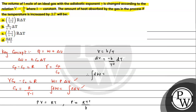Since pressure varies with temperature, we use the integral form: W equals integral of P dV. Substituting P equals RT squared divided by b and dV equals minus b divided by T squared times dT, the T squared and b terms cancel, giving W equals integral of minus R dT. On integration, the work done equals minus R delta T.